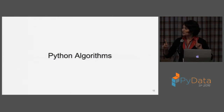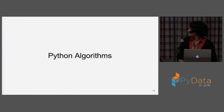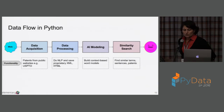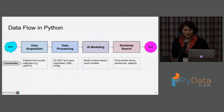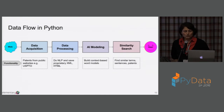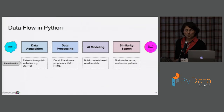Let's look at the algorithms in a little more detail. It's a simple four-stage data flow: acquisition, processing, AI modeling, and similarity search. We grab patents from the web — from the USPTO or other public sources. Then we do natural language processing and save proprietary metadata in XML and HTML. Then we use context-based word models and we use Gensim for that. Finally, we end up with similarity search — similar terms, sentences, patents, and a free text kind of search.